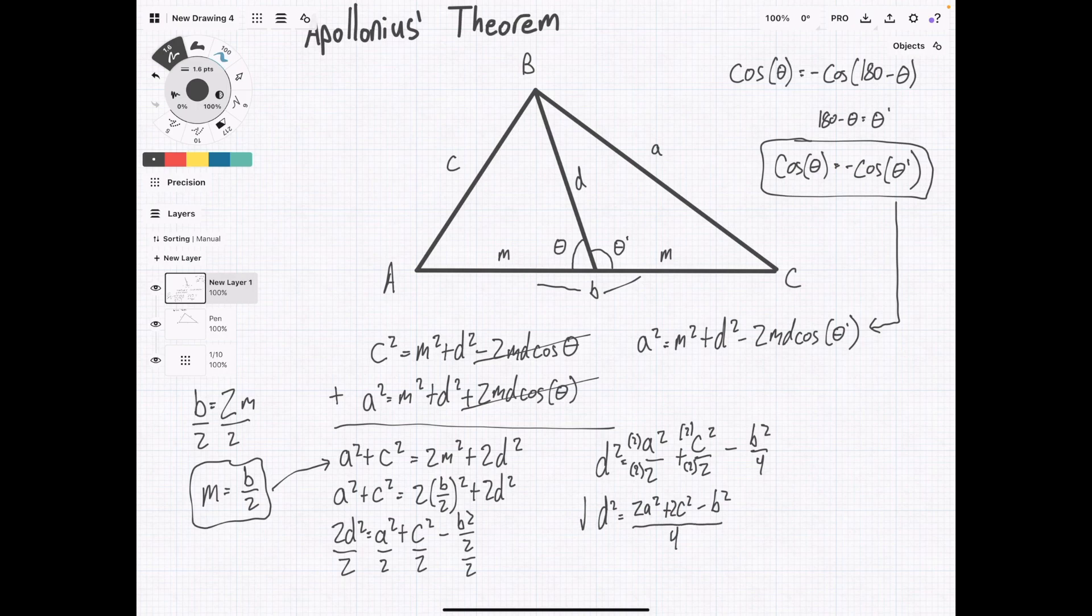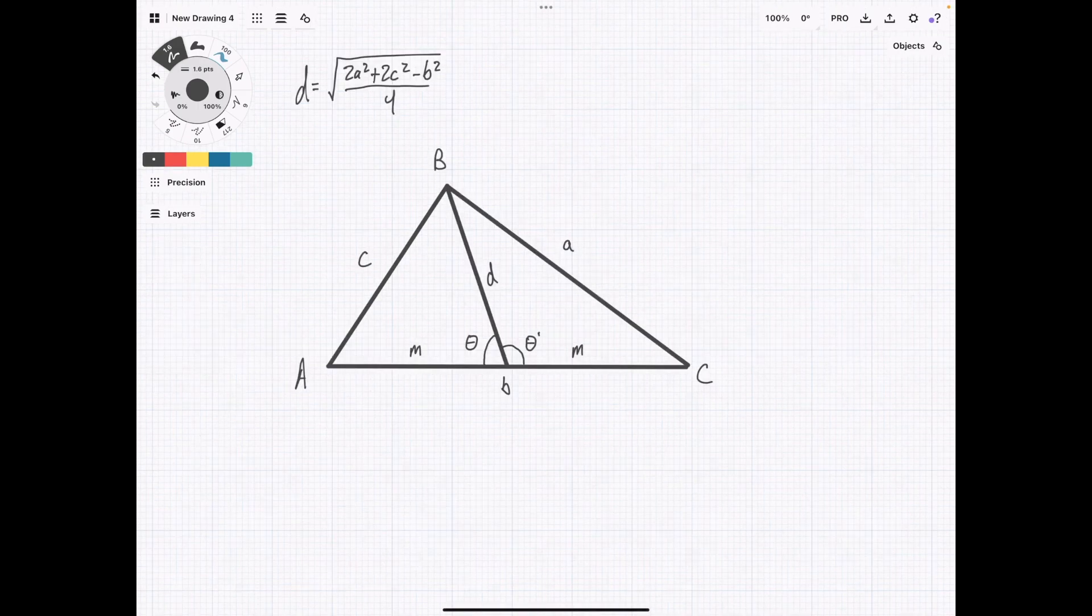And the last step, we take the square root of each side. And Apollonius' theorem states that d equals the square root of 2a squared plus 2c squared minus b squared over 4. So we just derived the length of d here.